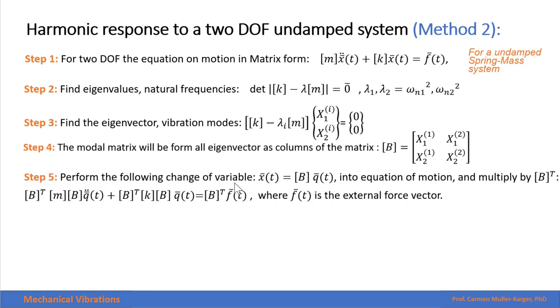Then we perform the following change of variable: we convert the generalized coordinates in terms of the principal coordinates and multiply the whole equation by the transpose of the modal matrix. That allows us to get the uncoupled principal matrices, and then we have been able to transform the two-degree-of-freedom system into two systems of one degree of freedom.